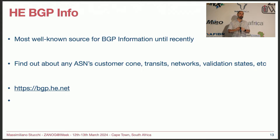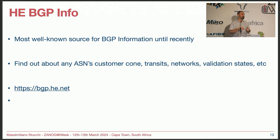Who else uses data from RIS Live and RIS? Hurricane Electric. Hurricane Electric has been for years the most well-known source for anything BGP — I remember people quoting it maybe 15 years ago. It still is a very useful resource. You can find out about anything: an ASN's customer cone, its transits, the networks, RPKI validation state, the internet exchanges where that network is supposed to be peering, and so on. It's a very valuable resource, but there are also alternatives nowadays.